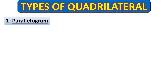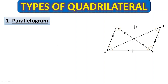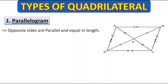The first one is the parallelogram. Let's learn the properties of a parallelogram one by one. The first property is opposite sides are parallel and equal in length. These two lines are parallel as well as equal. Same with these two line segments — opposite sides are parallel and equal in length.